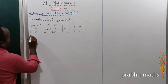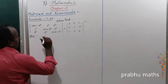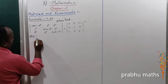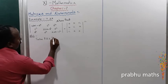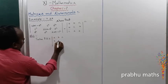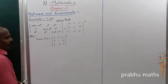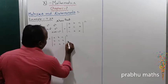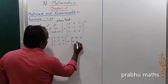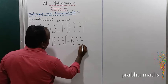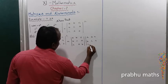First of all, let us take the right-hand side. RHS equals the determinant of [a,b,c; b,c,a; c,a,b], the whole square. This is equal to the determinant of [a,b,c; b,c,a; c,a,b] multiplied by the determinant of [a,b,c; b,c,a; c,a,b].